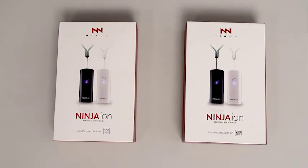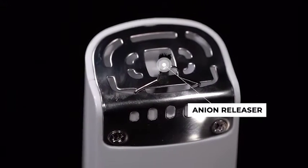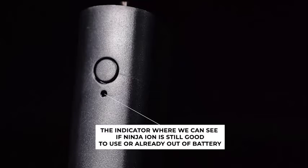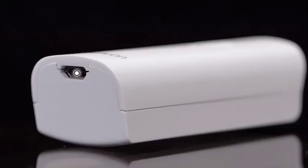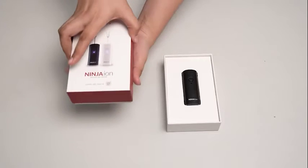Now, let us explore the parts of Ninja Ion. This part is the anion releaser, while this one is the on-off button. This part is the indicator where we can see if Ninja Ion is still good to use or already out of battery. Lastly is the USB connector where we put the USB cable to charge it.